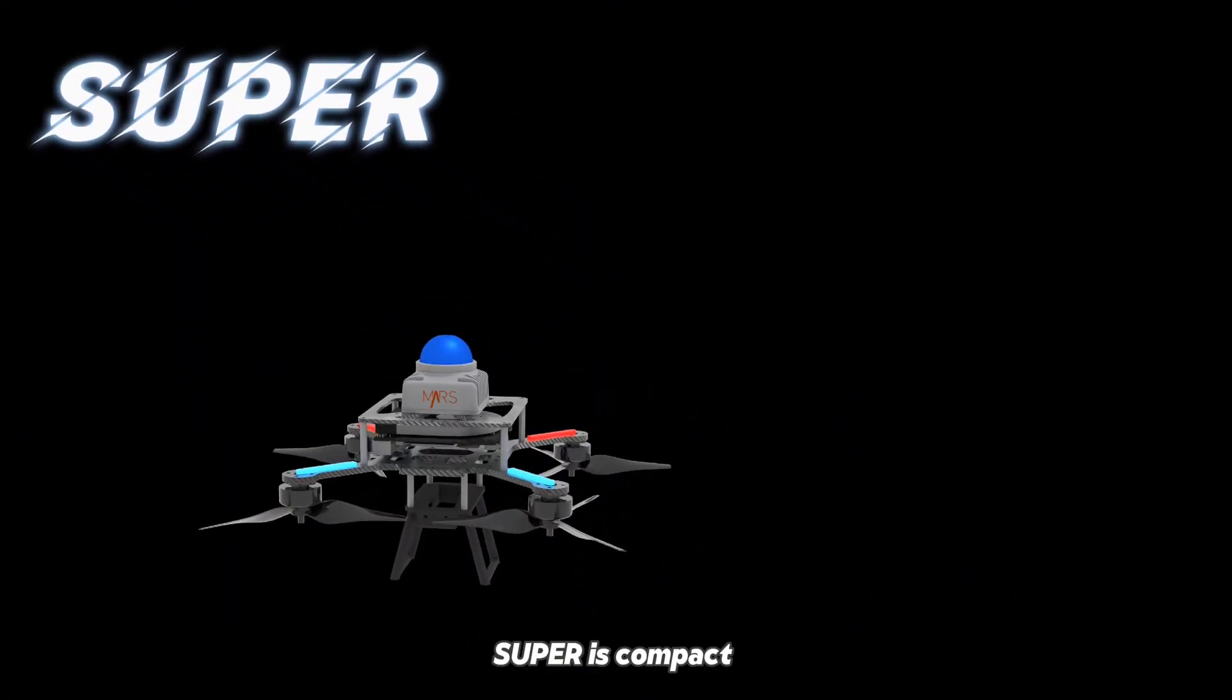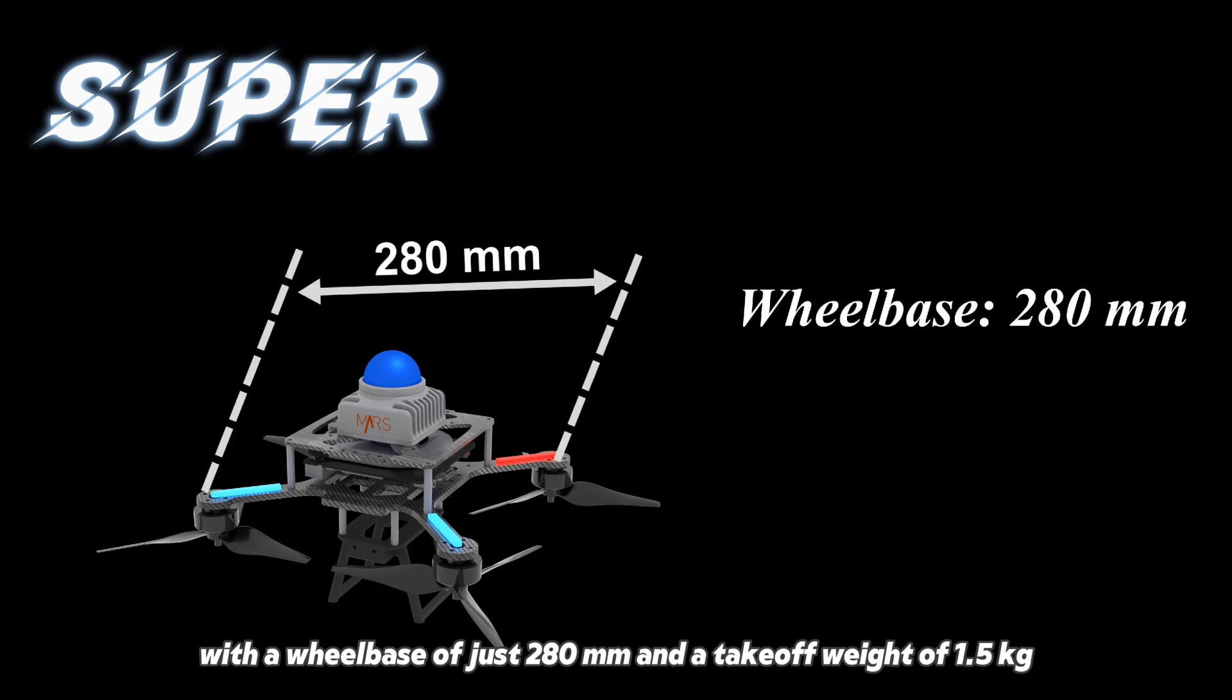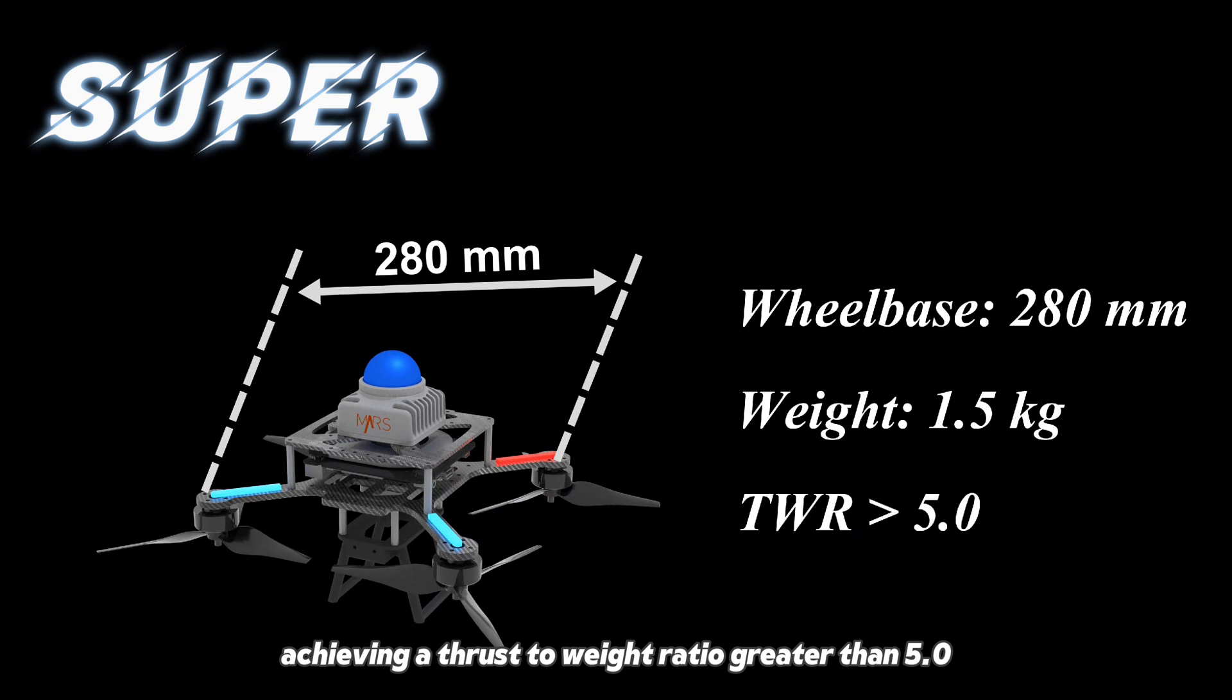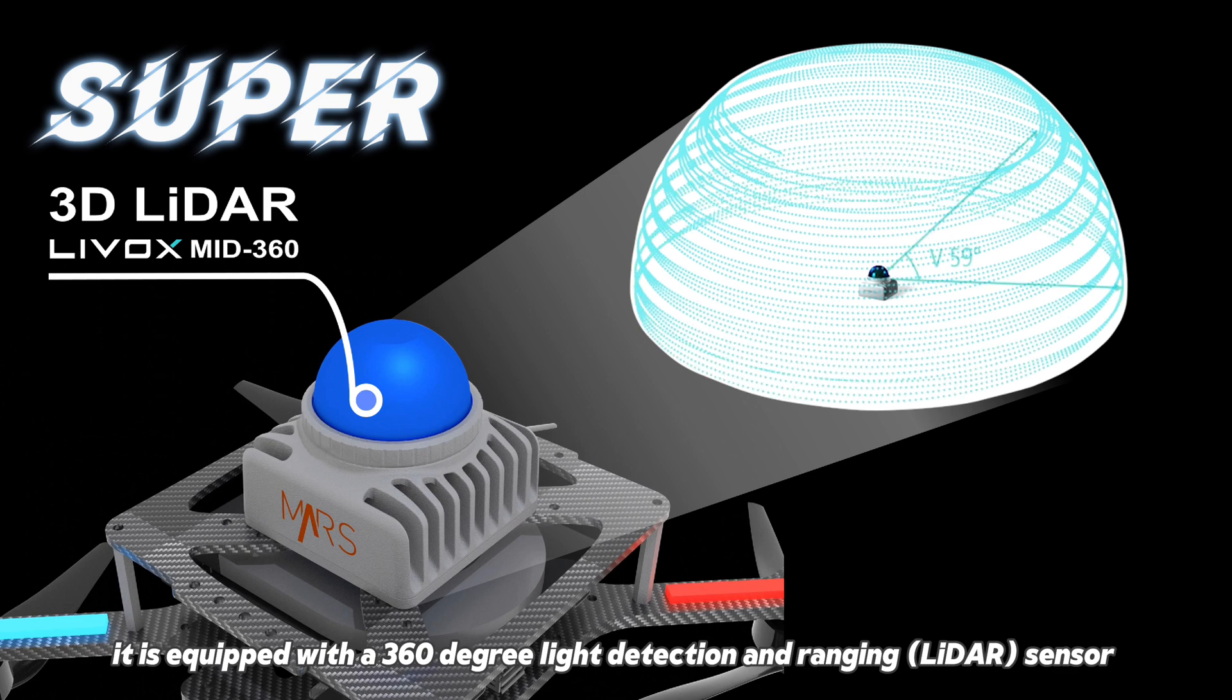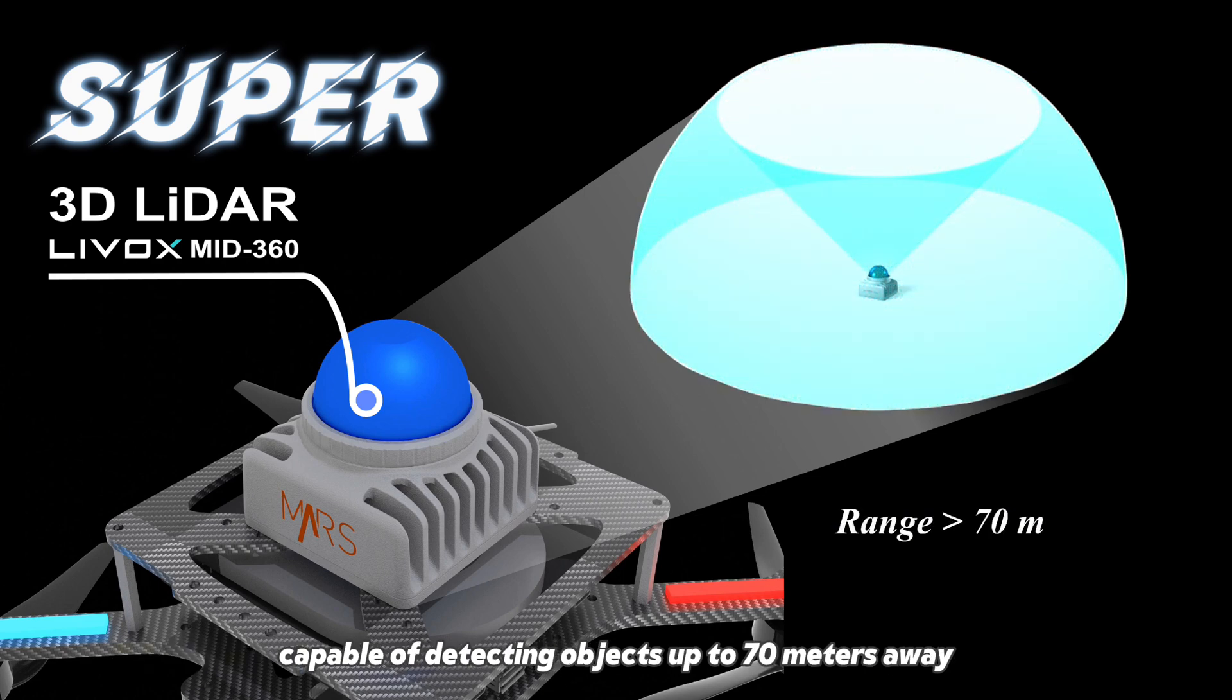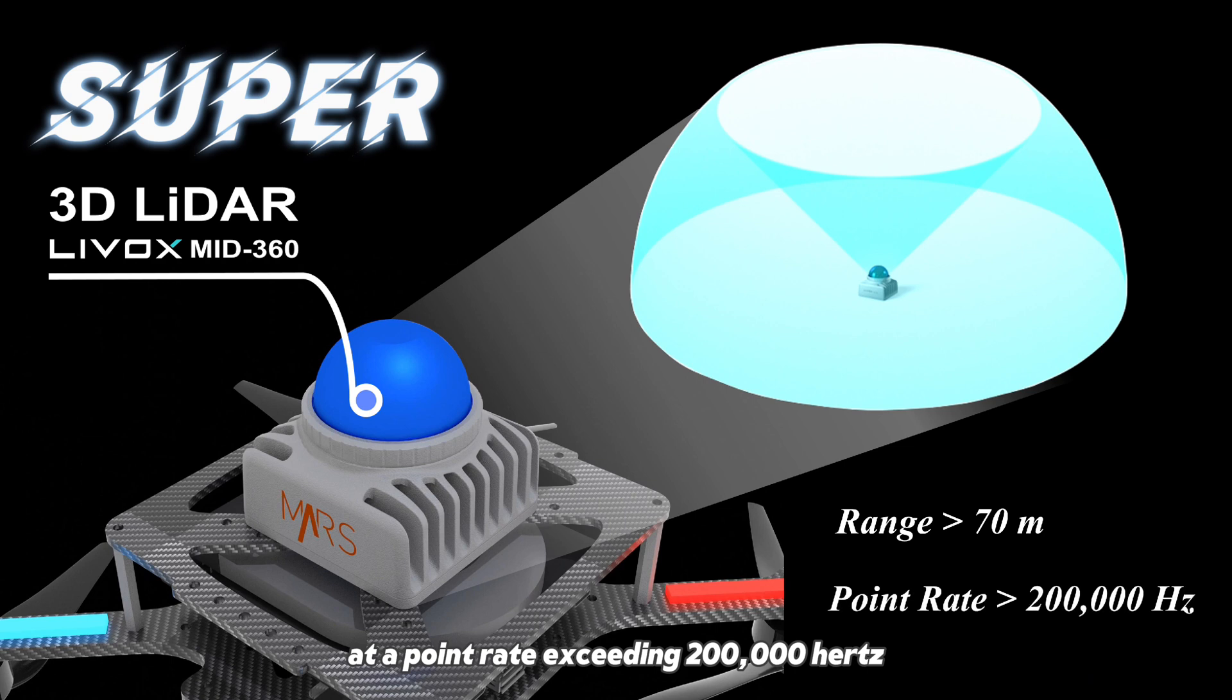Super is compact, with a wheelbase of just 280mm and a takeoff weight of 1.5kg, achieving a thrust-to-weight ratio greater than 5.0. It is equipped with a 360-degree light detection and ranging sensor, capable of detecting objects up to 70 meters away at a point rate exceeding 200,000 Hz.